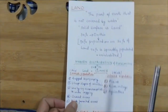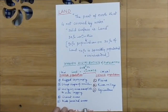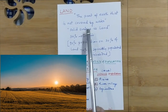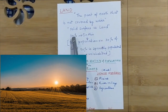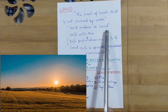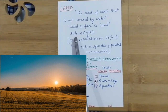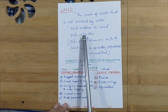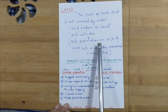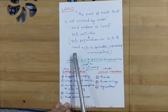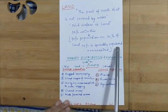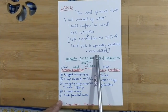Now, first of all, we are taking the resource land. How do we define land? The part of the earth that is not covered by water — the solid surface — is land, which is 30% of the whole world. On this 30% of the land surface, 90% of the population live on only 30% of the land. The remaining 70% of the land surface is either sparsely populated or uninhabited.